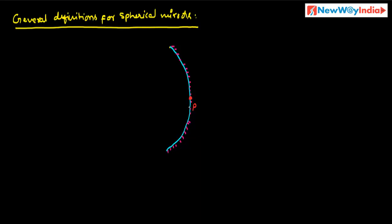Next is the center of curvature. A spherical mirror is a part of a hollow sphere. The center of that sphere becomes the center of curvature of the spherical mirror. It is denoted by C.